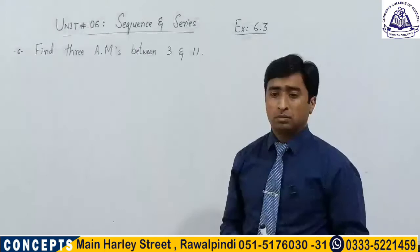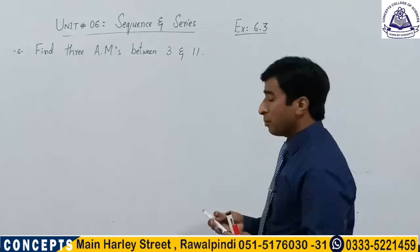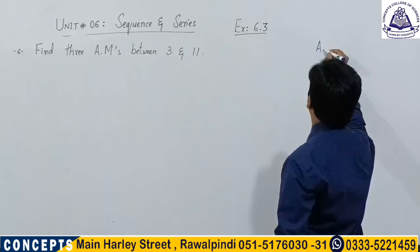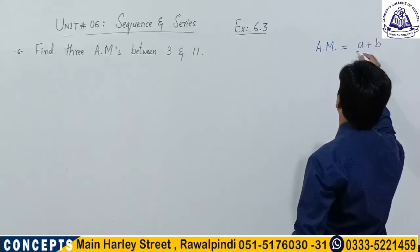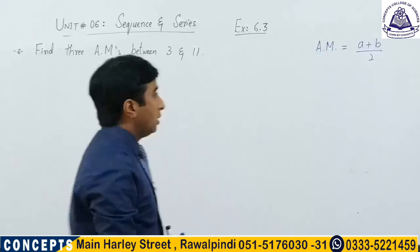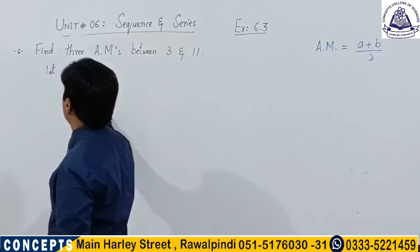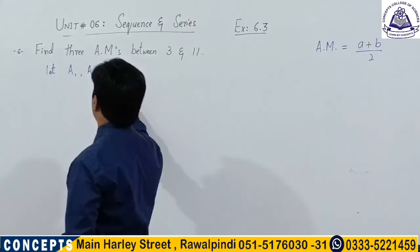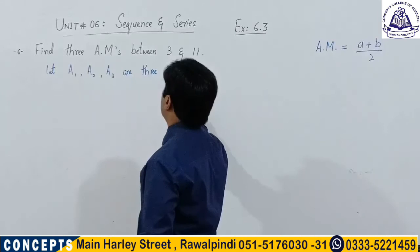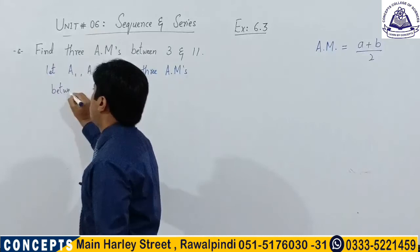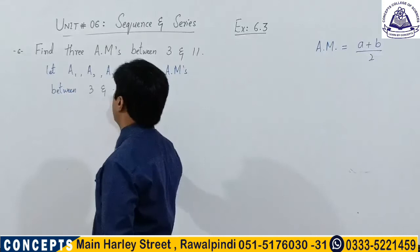Let's move to the next topic: arithmetic mean. To find the arithmetic mean between two numbers you use the formula: Arithmetic Mean = (a + b) / 2. Here we have to find three arithmetic means between 3 and 11.